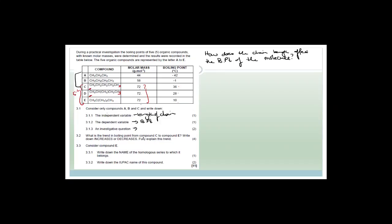What is the trend in boiling point from compound C to compound E? It's obviously decreasing. The reason is that more branches means a lower boiling point — they all have the same molecular mass because they have the same number of carbons and hydrogens, but D and E are branched while C is straight-chain. The more branches, the lower the boiling point, because the shorter the main chain, the weaker the intermolecular forces.